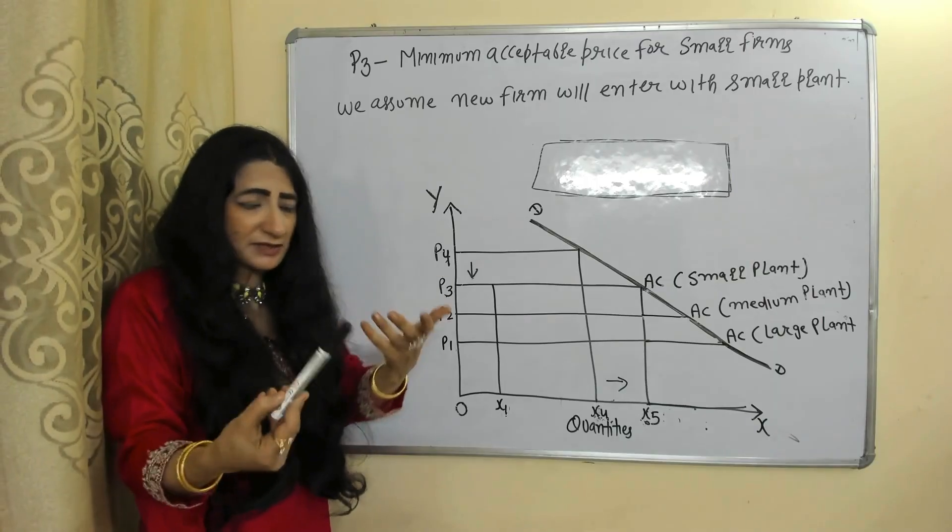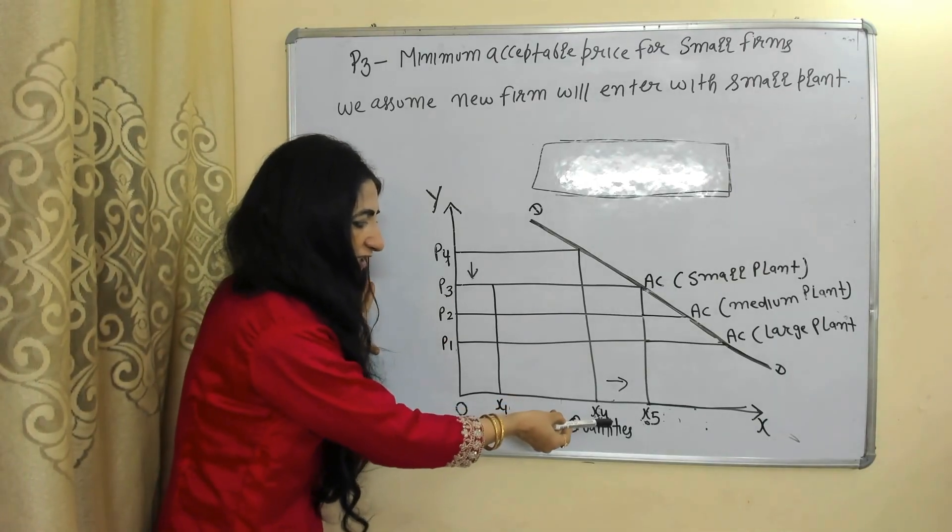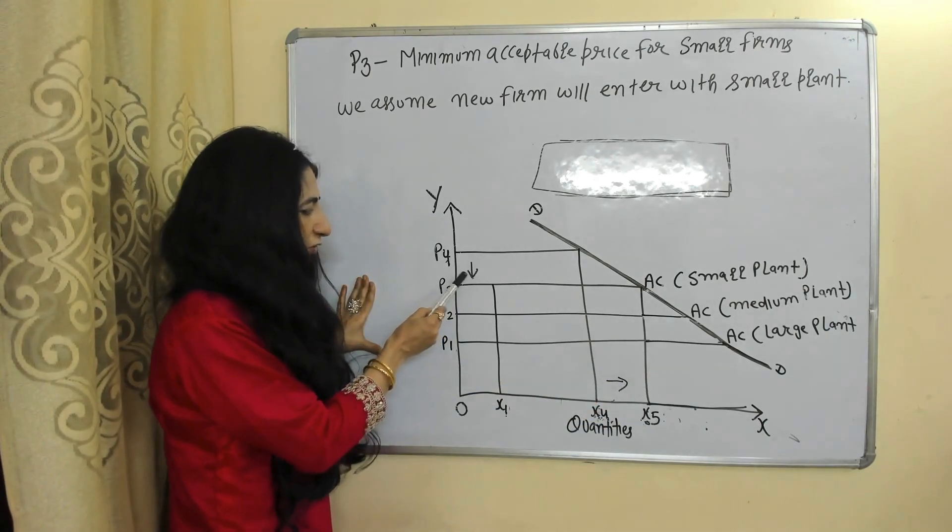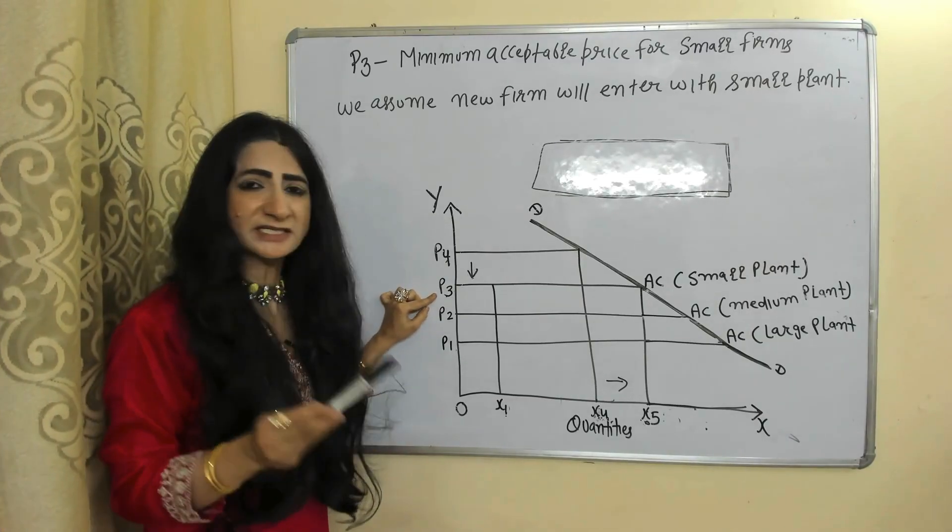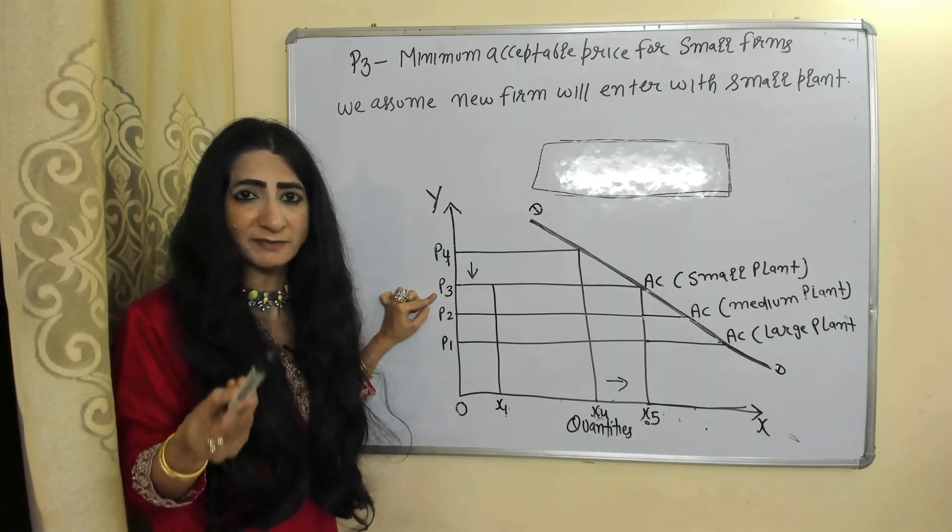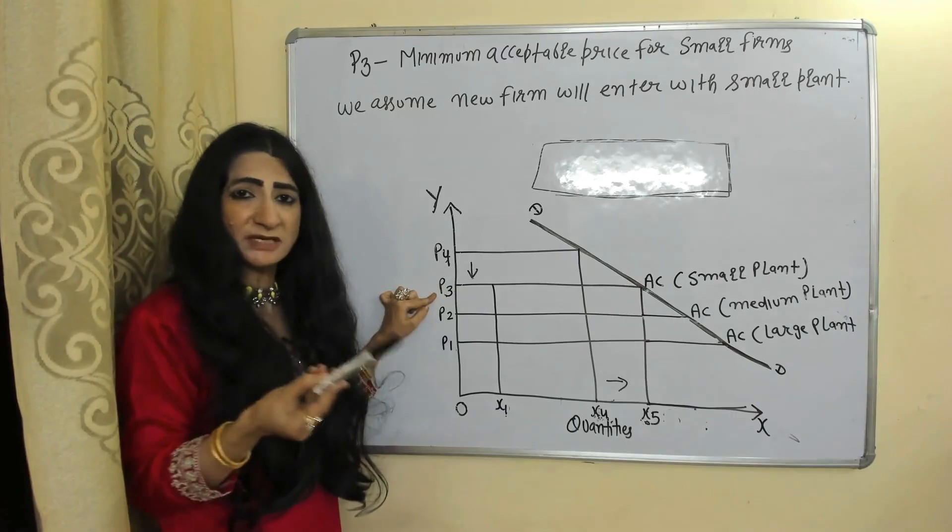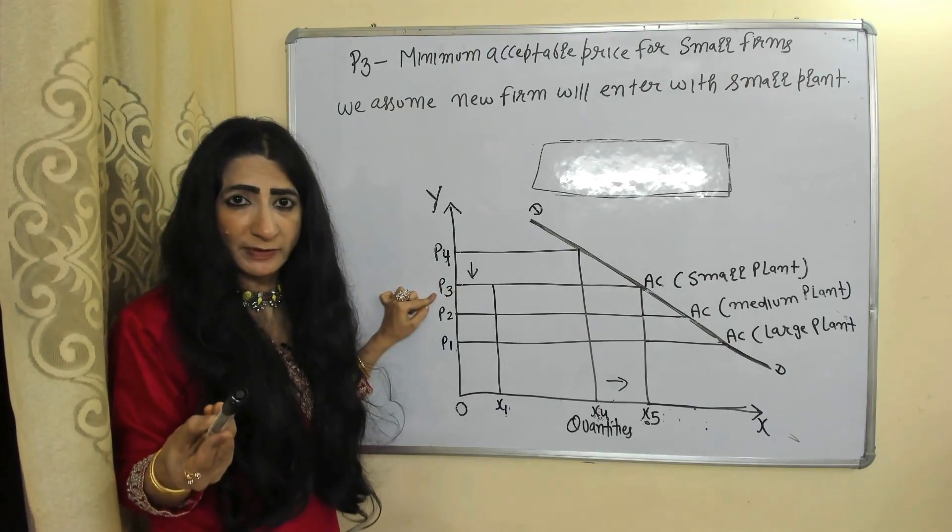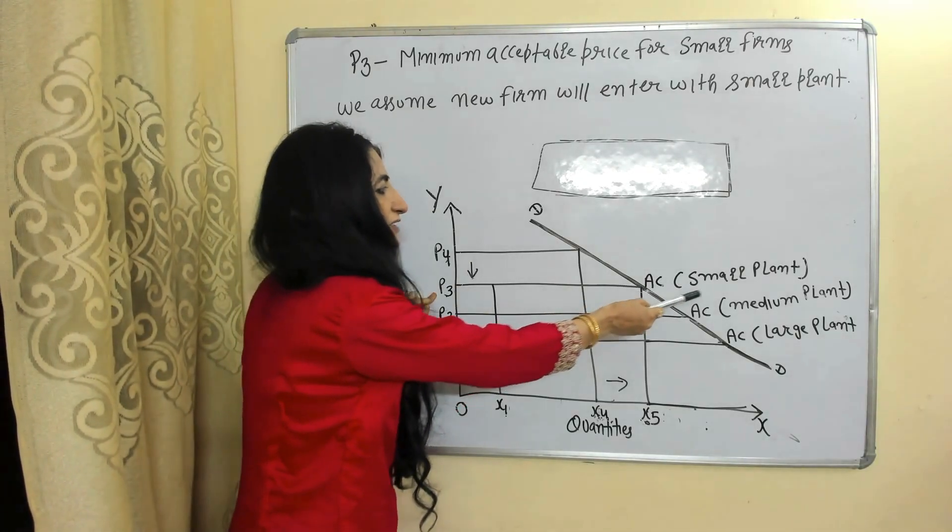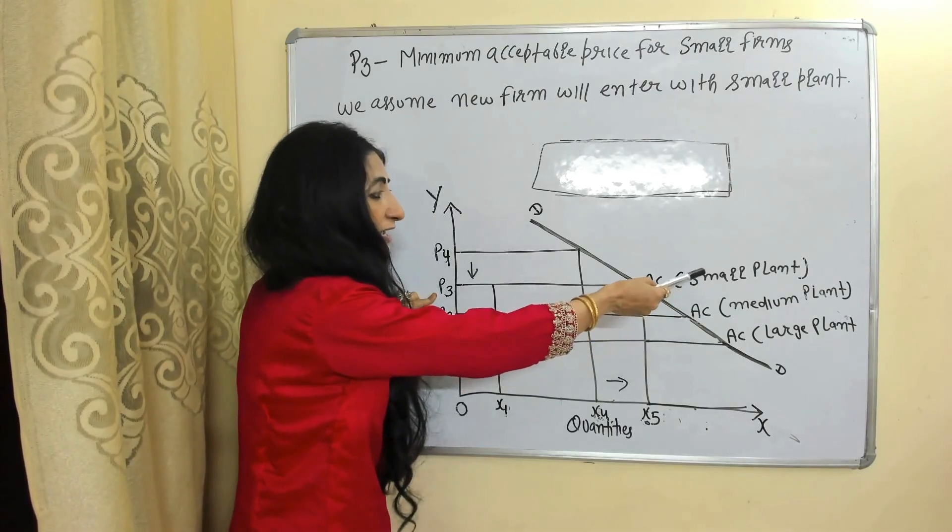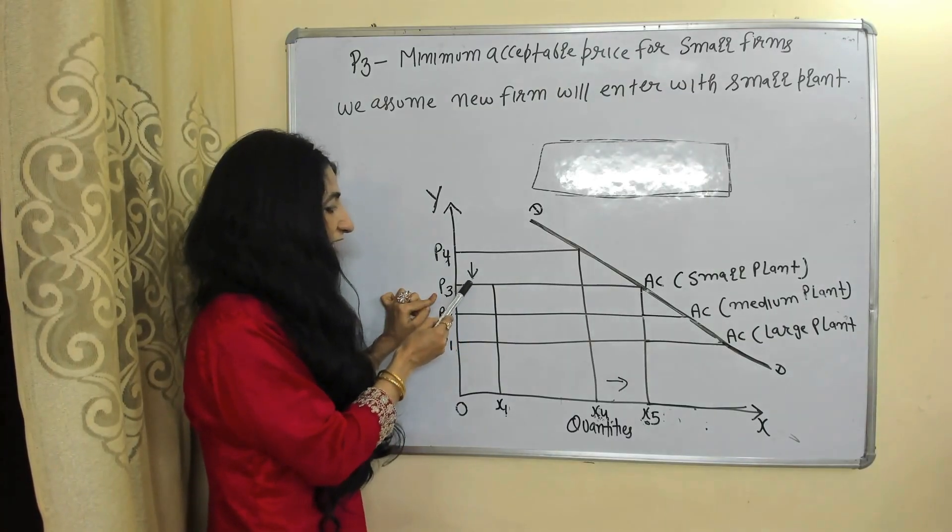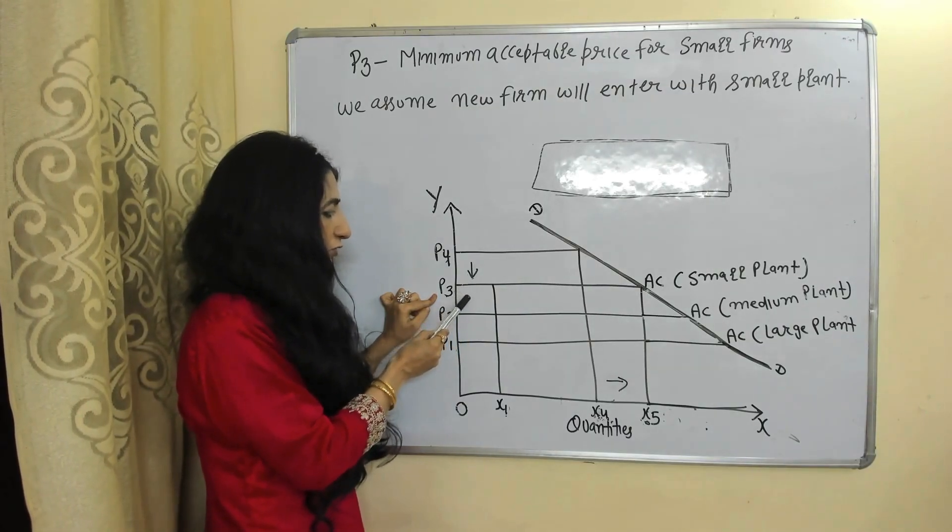As the new firm entered the market, output increased from X4 to X5 and price fell from P4 to P3. And P3 is the minimum acceptable price for a small plant. But why P3 is the minimum acceptable price for small plant? Because P3 price is equal to average cost of firm which has a small plant.